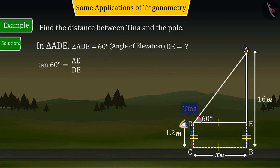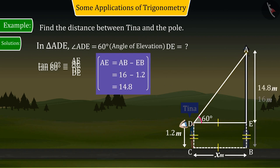From which the value of tan 60 degrees is obtained as AE by DE, where the measurement of sides AE and DE is 14.8 and X meters respectively.